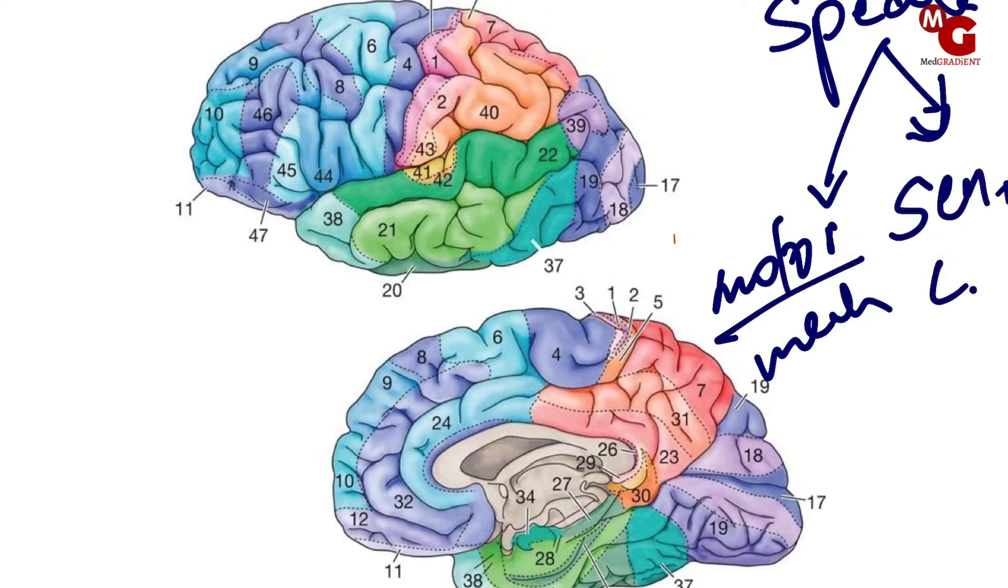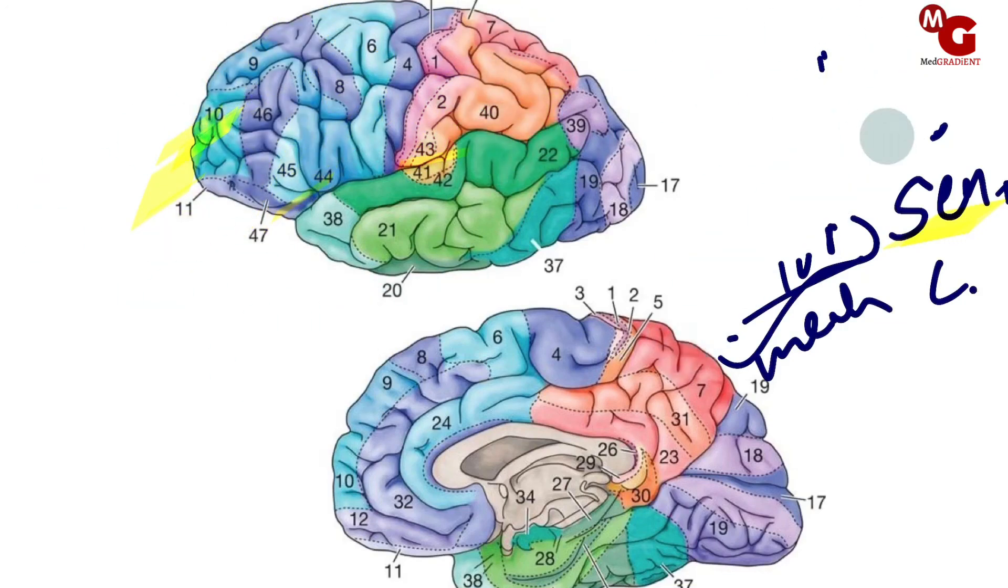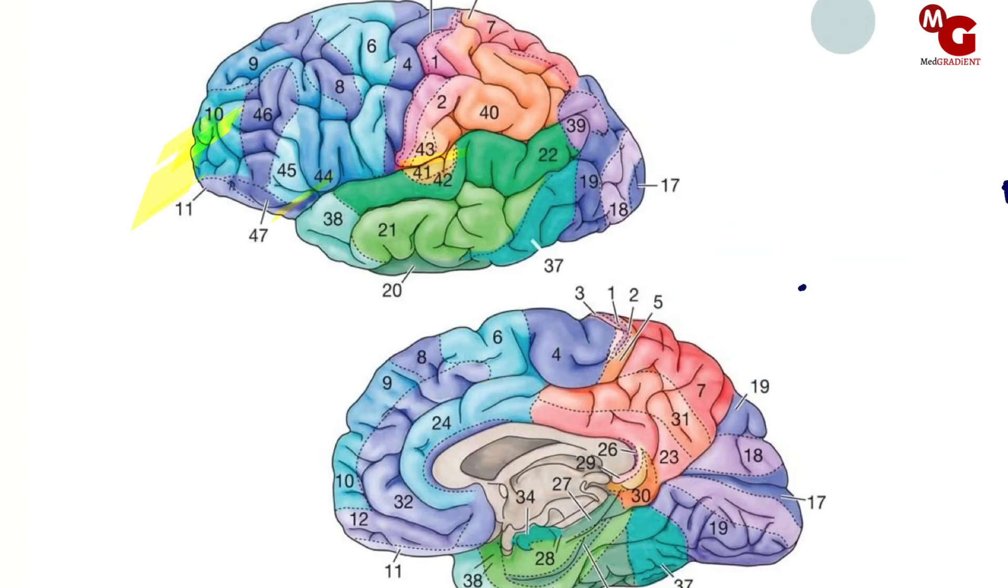At this moment, I want you to understand that something which is motor should lie in this area, and something which is sensory should lie somewhere here. Broca's area, which is responsible for the motor speech area, is located over areas 44 and 45.